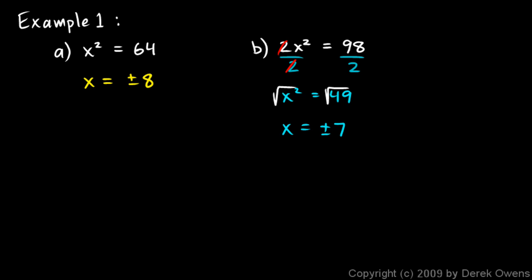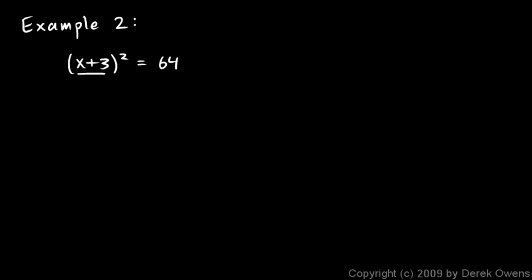The thing that is squared doesn't have to be a simple variable — it could be an expression like x minus 2. In this case, we have x plus 3, all squared, equals 64. The same technique works: take the square root of each side. The square root of x plus 3 squared is just x plus 3, and the right side is plus or minus 8.